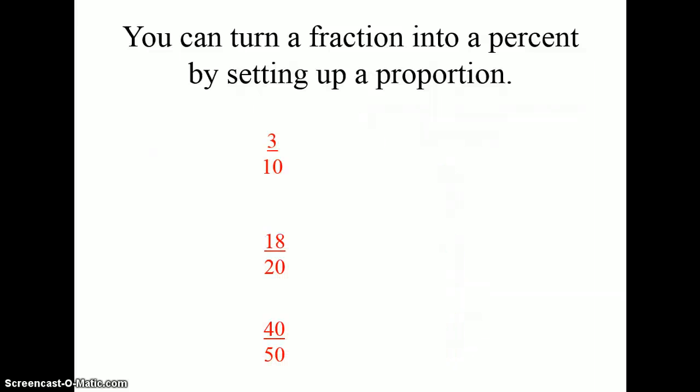Remember, we said percent is out of 100. So, if I wanted to know what three-tenths was as a percent, I would have three over ten equals something over 100. And, to find that, I would need to multiply 10 times 10 equals 100. So, three times 10 equals 30. So, my percent here would be 30 percent.